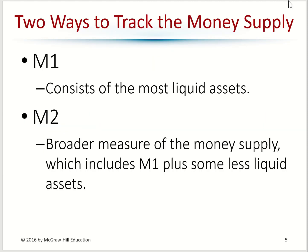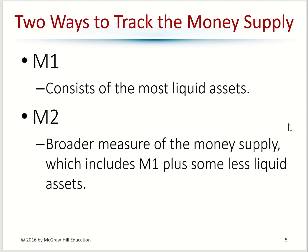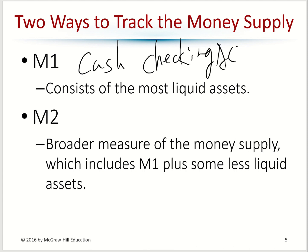Now let's look at the money supply — how much money we have available in the economy. Money supply is categorized as M1 and M2. M1 consists of money that is very liquid, meaning you can turn it to cash very quickly. The most liquid assets in M1 are your cash, your checking account, and any type of traveler's checks. Those are M1 — you can turn them into cash very quickly.